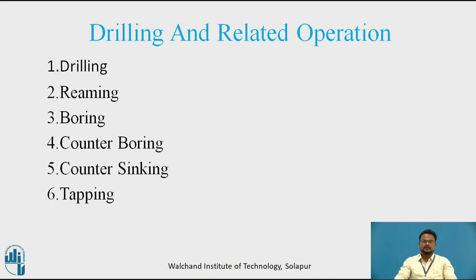Coming to drilling and related operations. The following operations will be discussed: drilling, reaming, boring, counter boring, counter sinking, and tapping. Drilling is the operation of producing a cylindrical hole in a solid object using a drill. To start a drilling operation, the center of the hole is marked by two cross lines and a center punch is used to highlight the center. The drill point is placed on the center punch mark and drilling is done. Drilled holes have the rough size of the required hole and need further sizing and finishing operations.